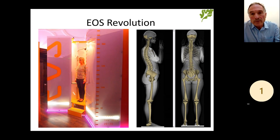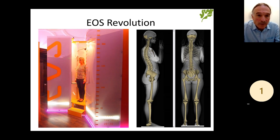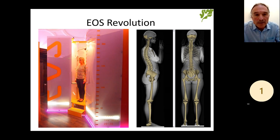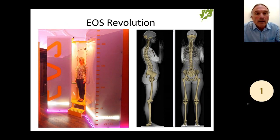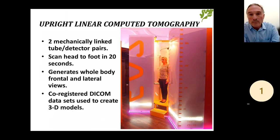The ability to look at this in real time and weight-loaded positions moved forwards a long way with what I call the EOS revolution. You can see here on the left an EOS machine, which is a fairly cumbersome bit of kit. Although it produces images that look like X-rays, they're not to be thought of as X-rays. These are actually two linear scans which are connected together and processed to produce a 3D model of the standing skeleton. It takes about 20 seconds to complete the full scan. We call this upright linear computer tomography.